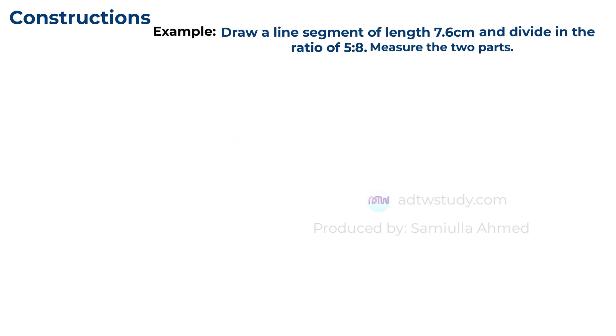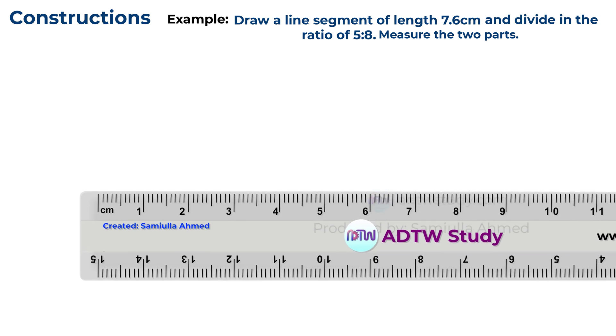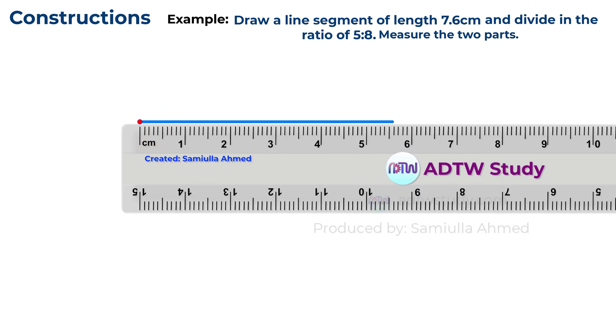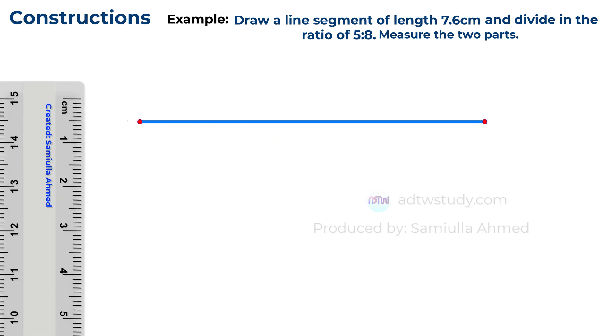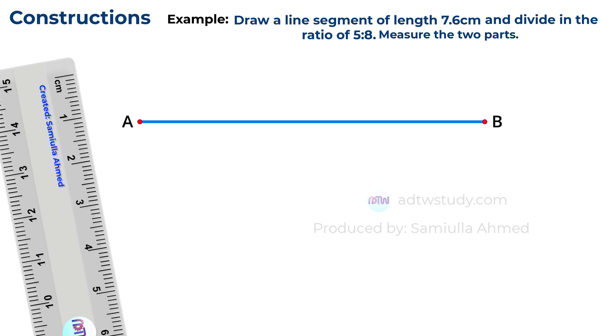First, take a ruler and draw a line of 7.6 centimeters. Label the endpoints as A and B. Next, to divide this line we will construct a line at an acute angle.